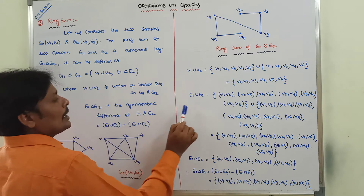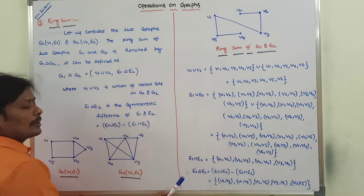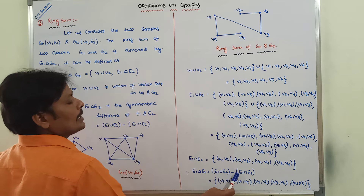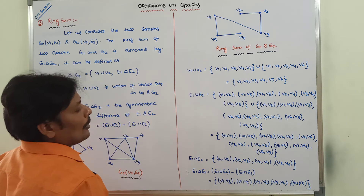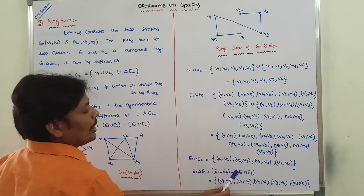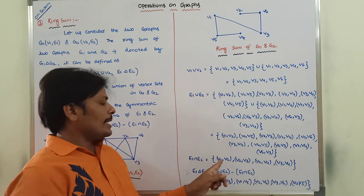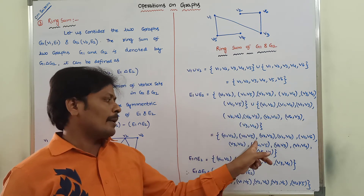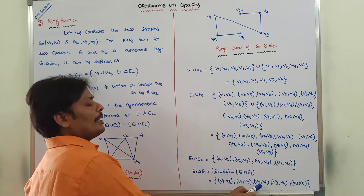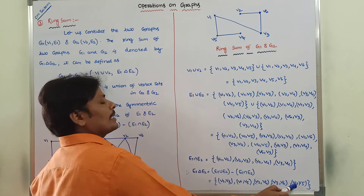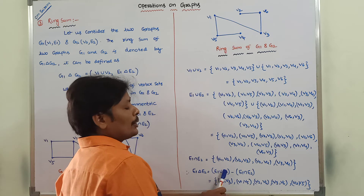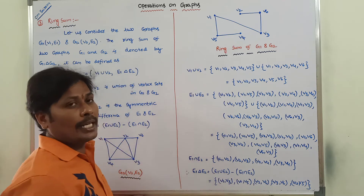Now, after finding E1 union E2 and E1 intersection E2, we find the symmetric difference E1 delta E2 by eliminating the intersection edges from the union. The result is: {V1,V3}, {V1,V5}, {V2,V6}, {V3,V6}, and {V4,V5} — these are the edges in E1 union E2 that are not in E1 intersection E2.